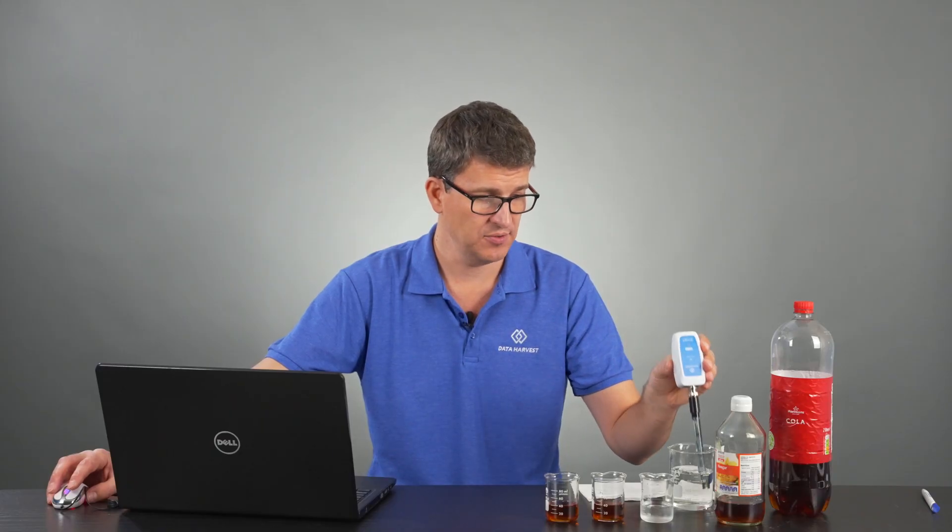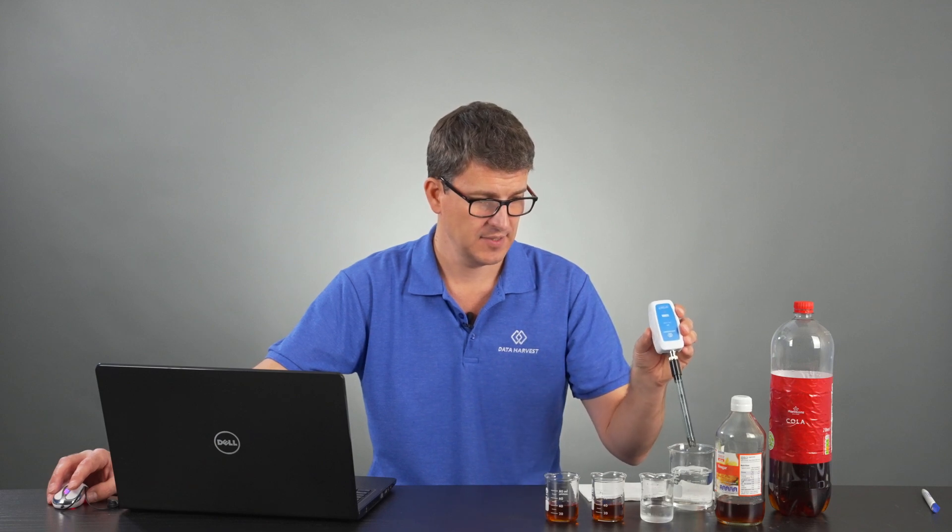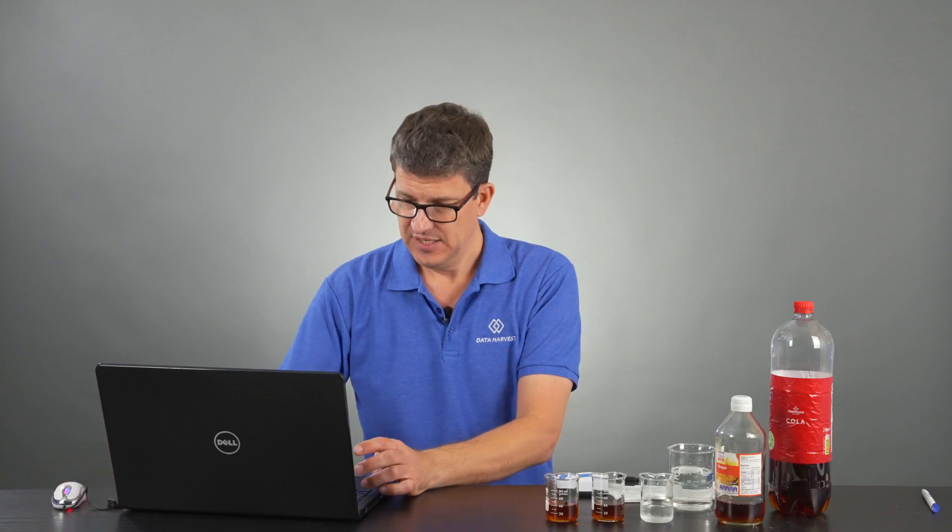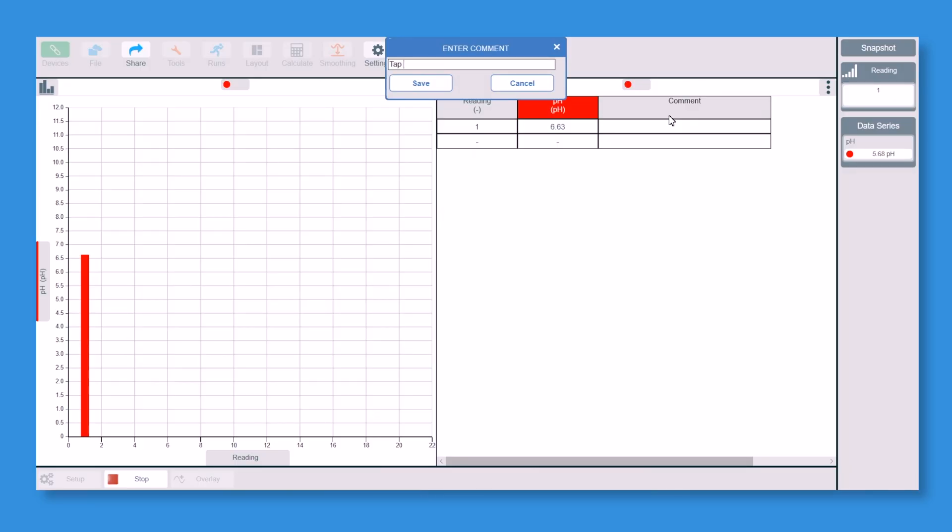So it's now got that on there. So once you click take reading you can take that out, always wash it straight away. We'll just lay it down. Now with students obviously you'll have one student doing that, another one doing the device so you wouldn't necessarily have to put it down each time. So this one is tap water.